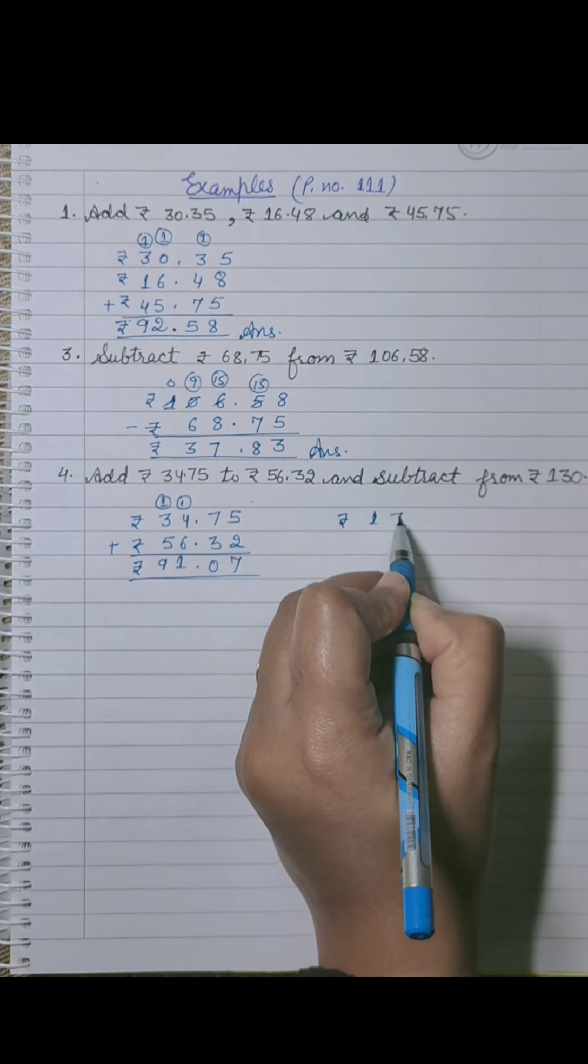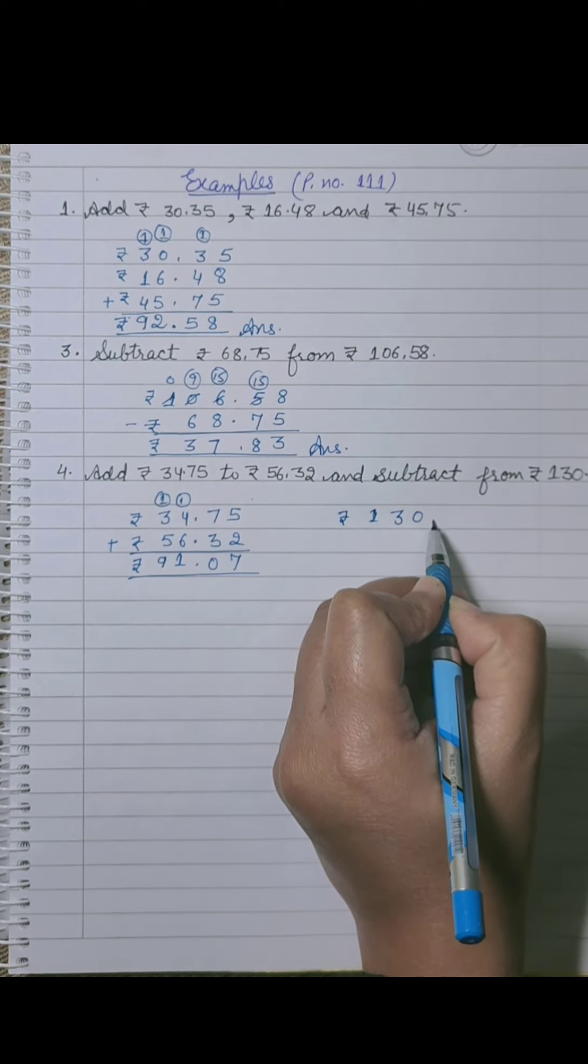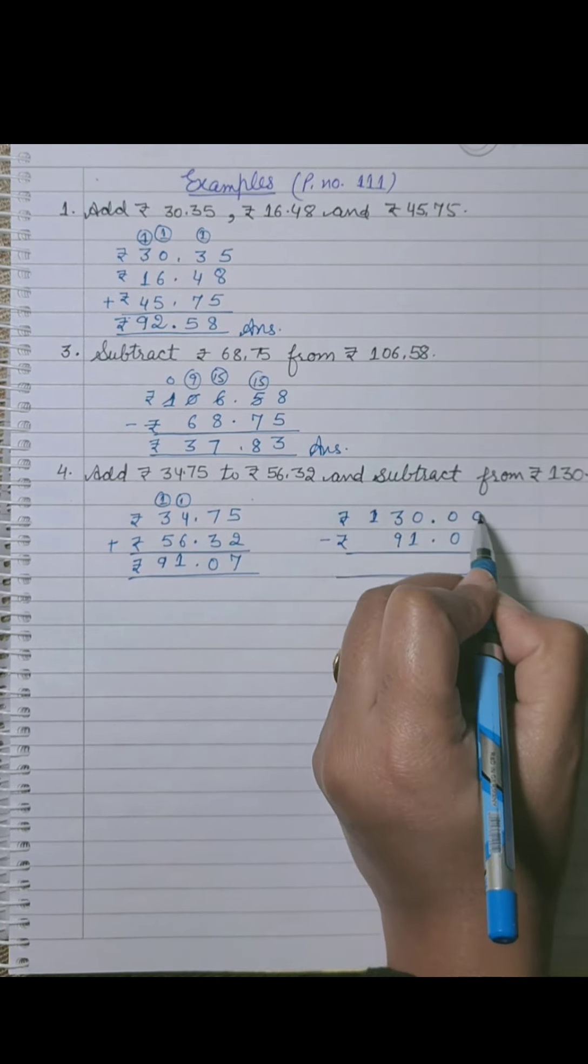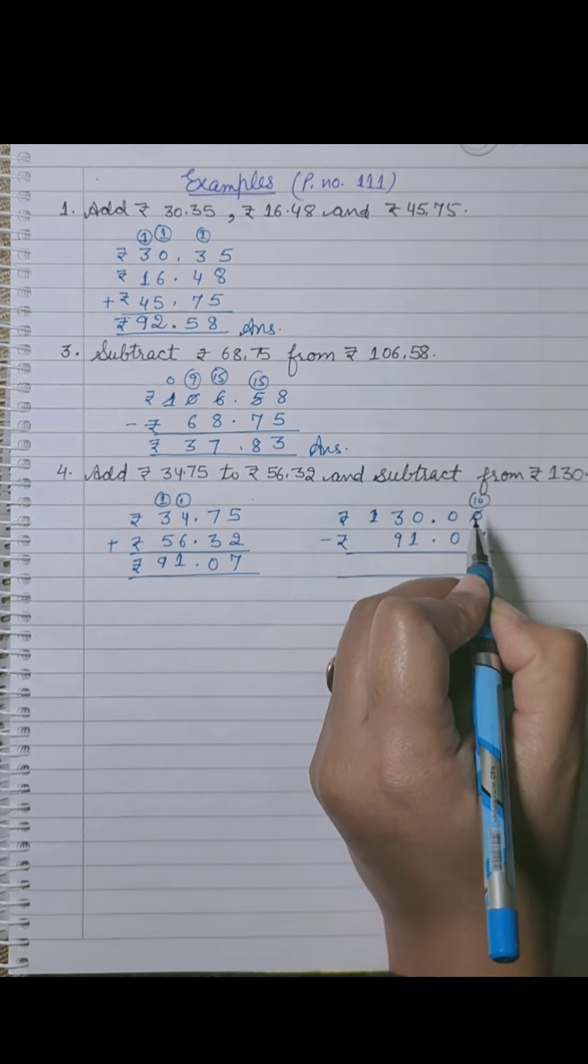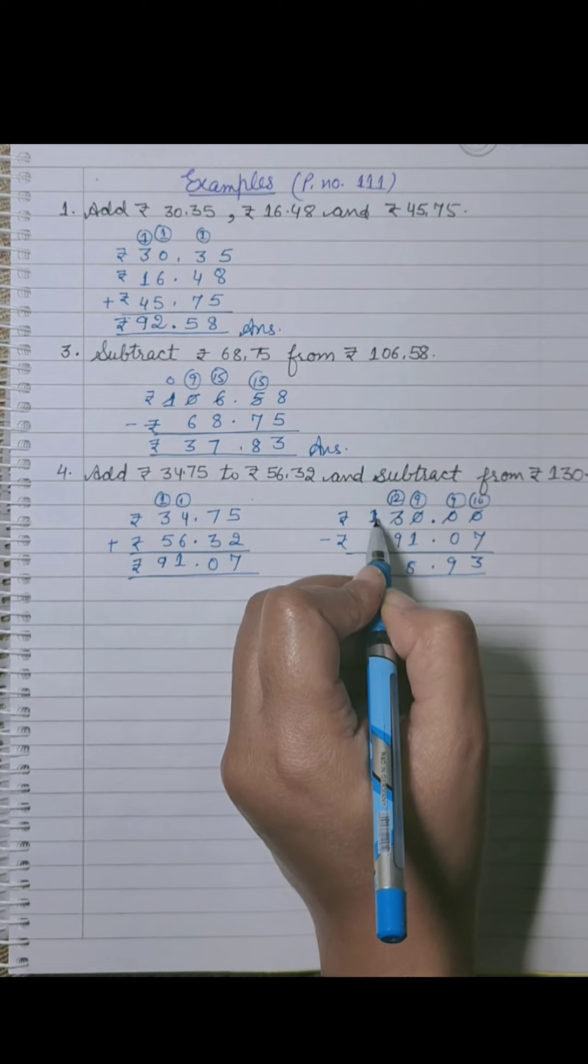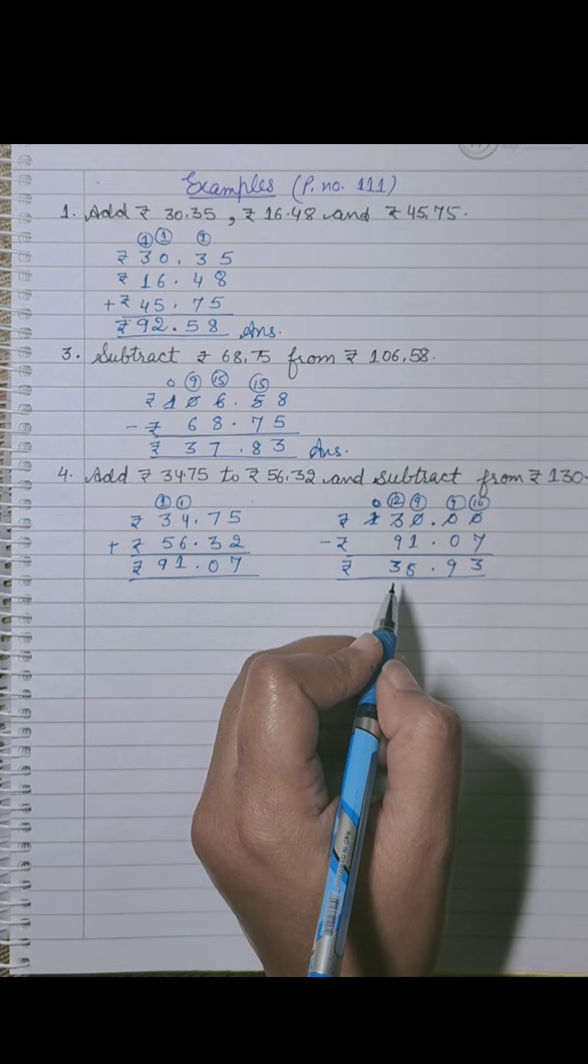130 has no terms after it, so we will place 00, meaning 00 paise. So minus 91.07. We will subtract. Here there's 0, so we borrow from 3. 10 minus 7 is 3. 9 minus 0 is 9. 9 minus 1 is 8. 2 minus 9 is not possible, so borrow 100 from the hundreds place. 1 becomes 0. 12 minus 9 is 3. So it equals 38.93. The answer is rupees 38.93. Students, the answer given after solving the sum says rupees 108.93, which is wrong. So you should correct it and write 38.93.